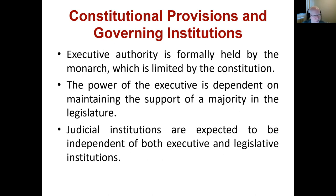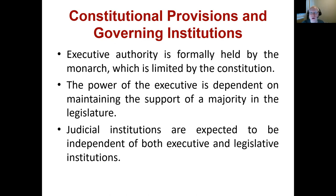In terms of the governing institutions, for Canada typically executive authority is formally held by the monarch, which is limited by the constitution. In Canada, the executive is composed of the monarch at the top, the governor general who represents her or him, then the prime minister and cabinet. The monarch as the head is severely limited by the constitution. While we're a constitutional monarchy, the parliament typically has more powers, and the monarch's portion of the executive is severely constrained by the constitution and even more so by constitutional convention.